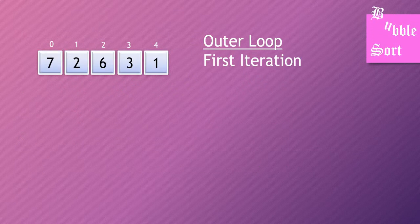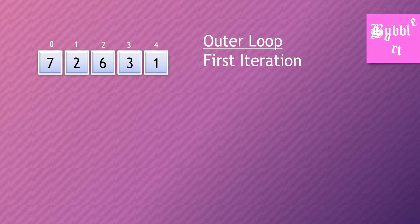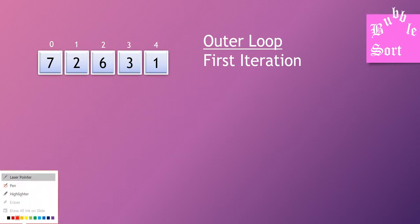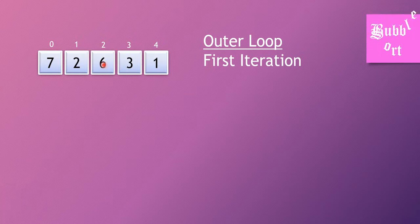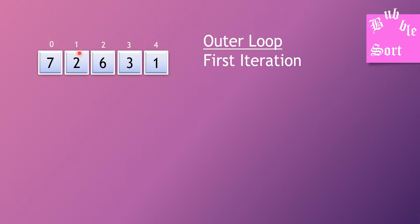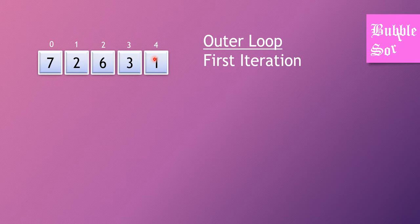Now we are going to see the algorithm — the technique used in bubble sort. You can see a list of elements available, shown as boxes representing elements in an array. The index values are given on top, that is zero to four, meaning you have five elements. We are going to illustrate bubble sort with these five elements.